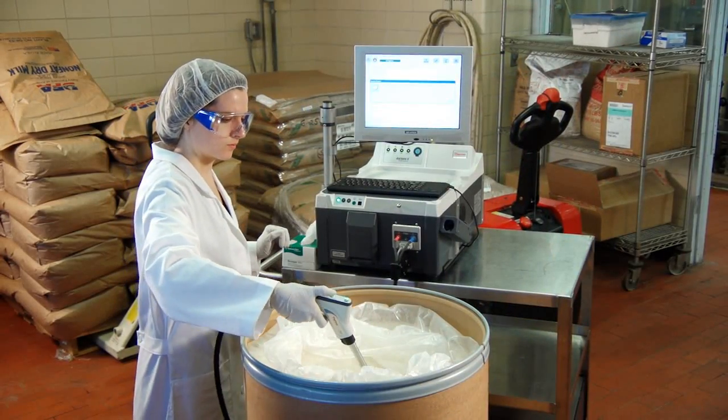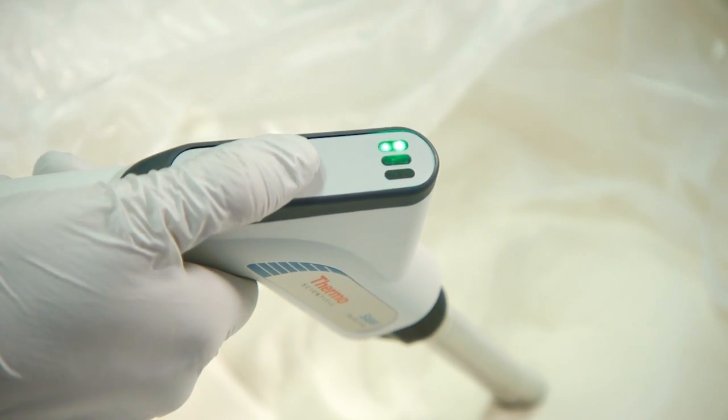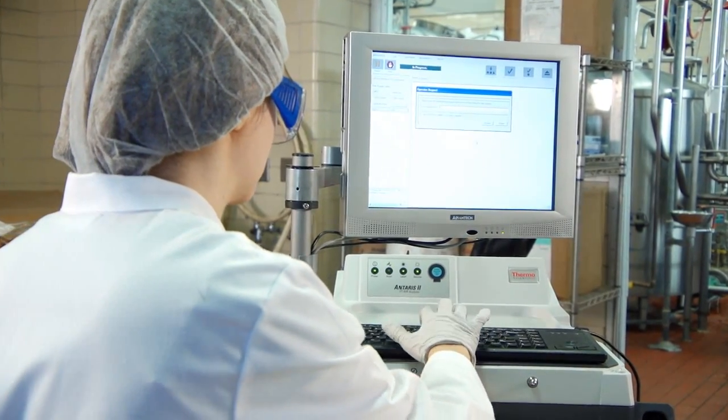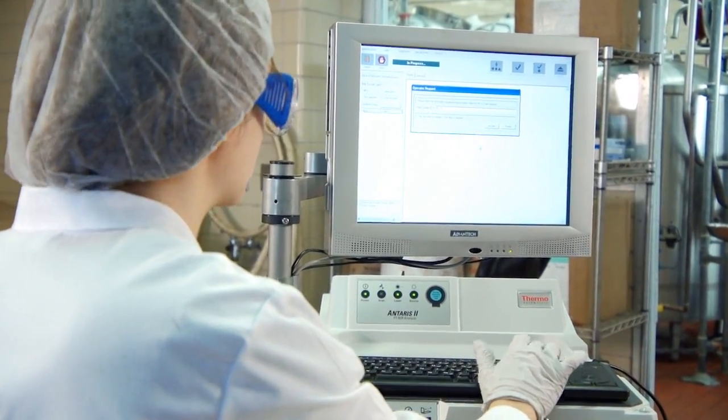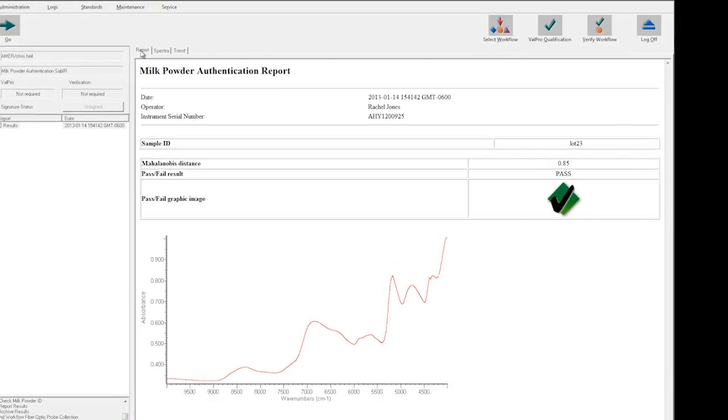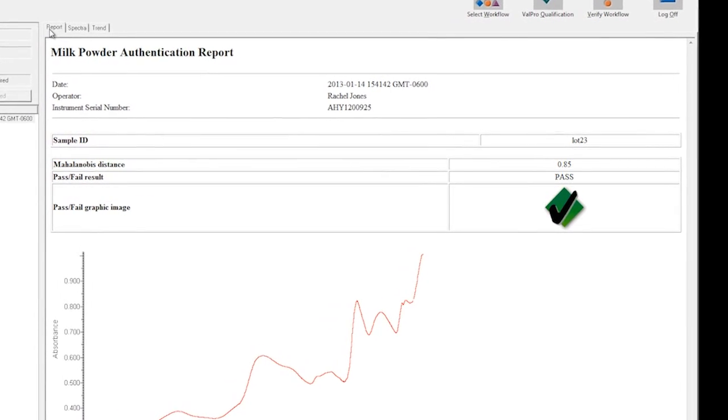Raw material qualification is as easy as the press of a button with a Thermo Scientific SABE-IR fiber optic probe. A workflow is automatically executed with predefined parameters that collects the spectrum, runs an identification algorithm, displays conclusive pass-fail results, and automatically reports and archives results.